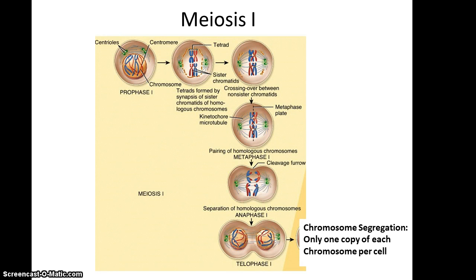You go through anaphase 1 and telophase 1, and during this process of dividing the tetrads between the two new cells, you have what's referred to as chromosome segregation. The mostly paternal chromosome will go to one side and the mostly maternal to the other side, and this is a random occurrence for each of the 23 tetrads, so you get a different mixture of maternal and paternal chromosomes on each side — another layer of genetic recombination.